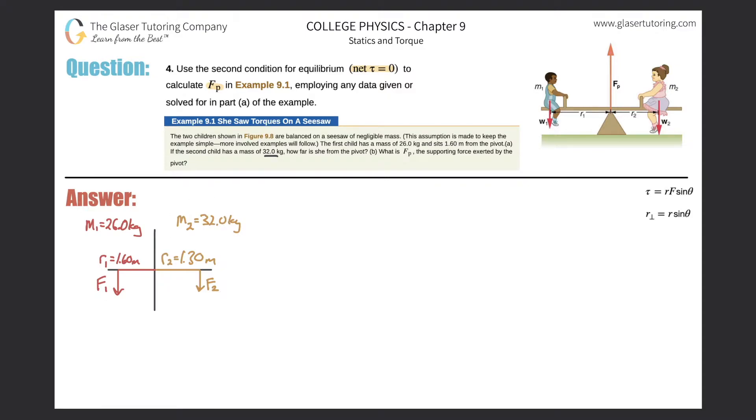The first child is 1.6 meters away from the fulcrum, and the second child, that's what was solved for in part A, she is 1.3 meters away from the fulcrum.